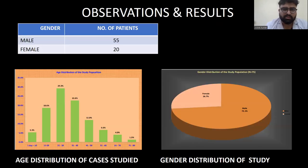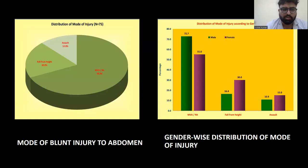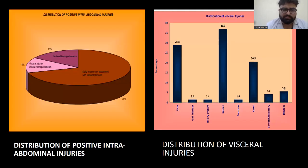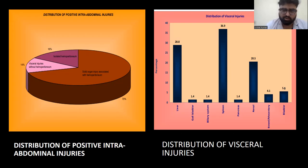Regarding results and observations, the majority of patients were male, mostly in the 21 to 40 age group, accounting for about 51 percent. The predominant mode of injury was road traffic accidents in both males and females, while fall from height and assault were proportionally higher in females. Solid organ injury associated with hemoperitoneum accounted for about 70 percent of cases, and the spleen was the most commonly injured organ.